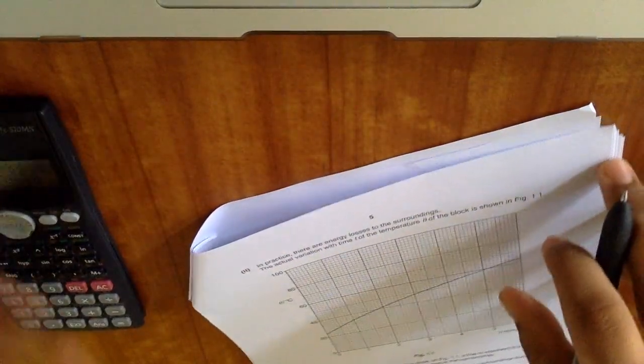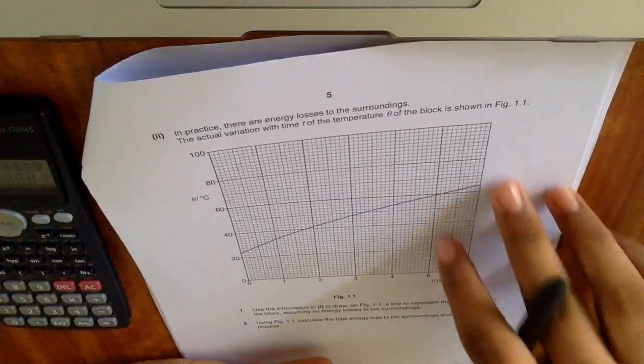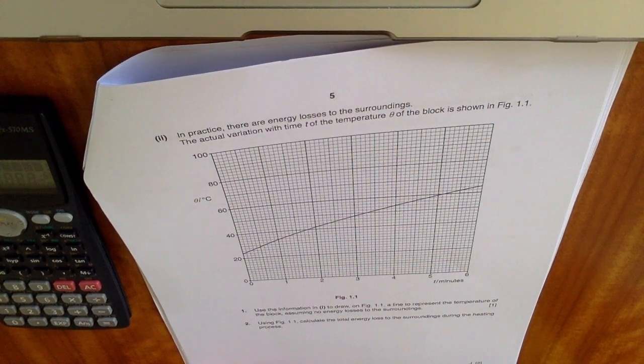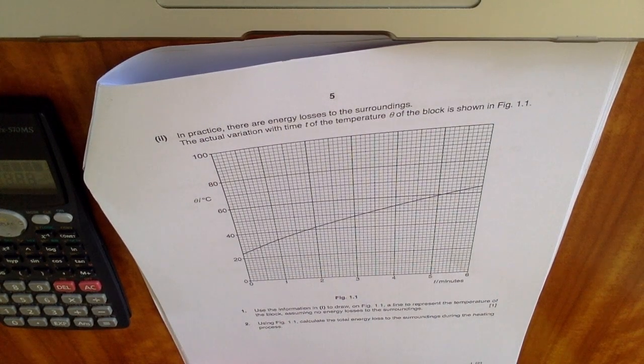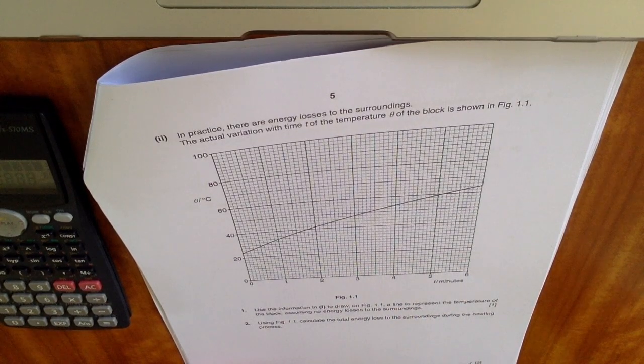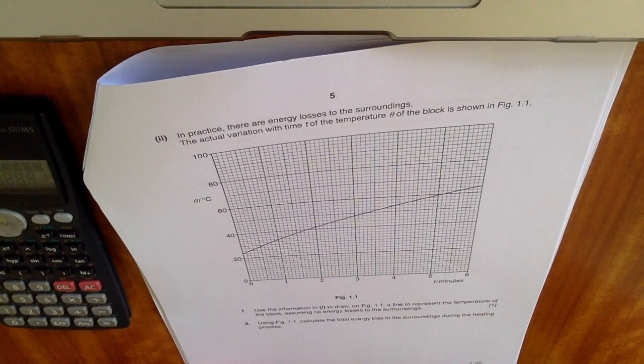Okay, in practice there are energy losses to the surroundings. The actual variation with time t for the temperature theta of the block is shown in figure 1.1. Using the information to draw on figure 1.1 a line to represent the temperature of the block assuming there are no energy losses to the surroundings.